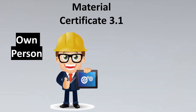Material Certificate 3.1 is like a certificate produced by the raw material manufacturer's own person — someone who was not part of the production. So imagine there is a team set up to make the product, and a person from the same company who is not part of production can inspect and certify that this particular raw material meets the required grade of stainless steel or Hastelloy, etc.